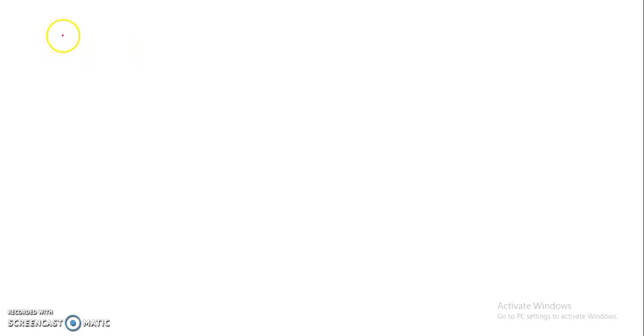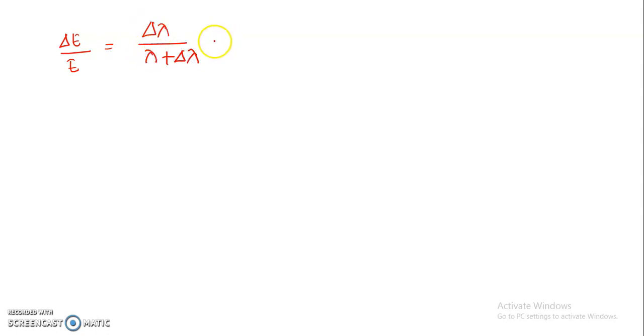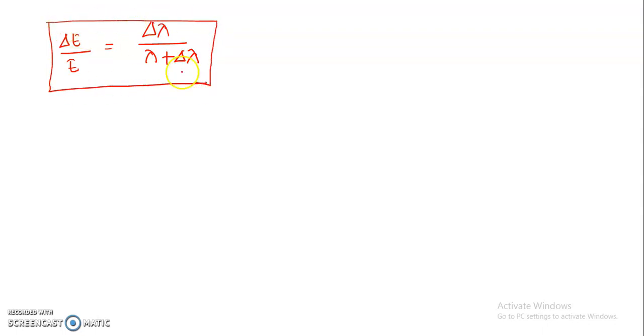So we have got an expression for fractional loss in energy: delta E by E equals delta lambda divided by (lambda plus delta lambda).